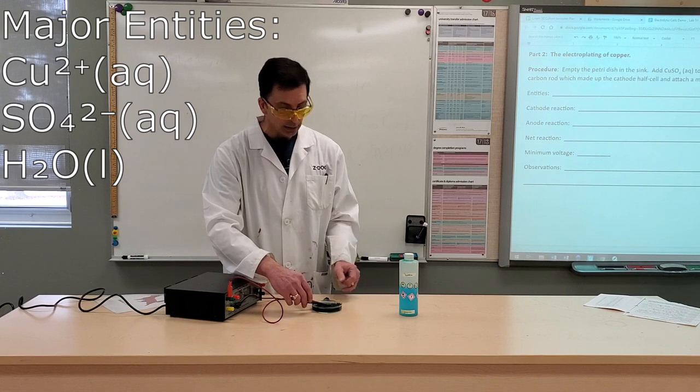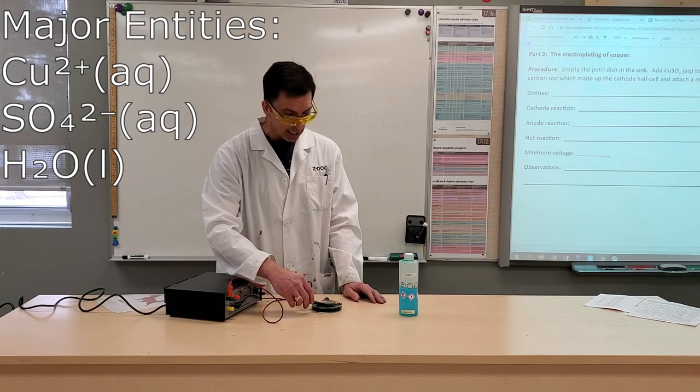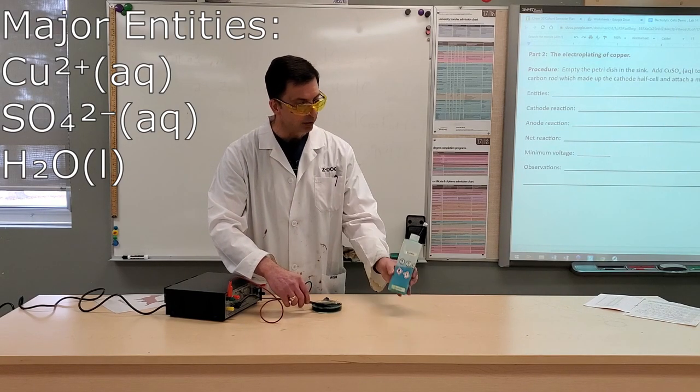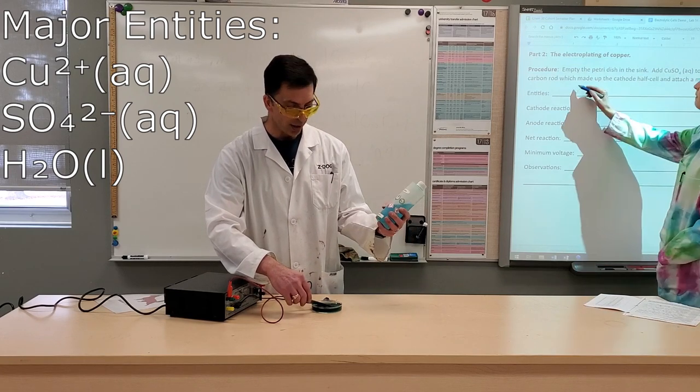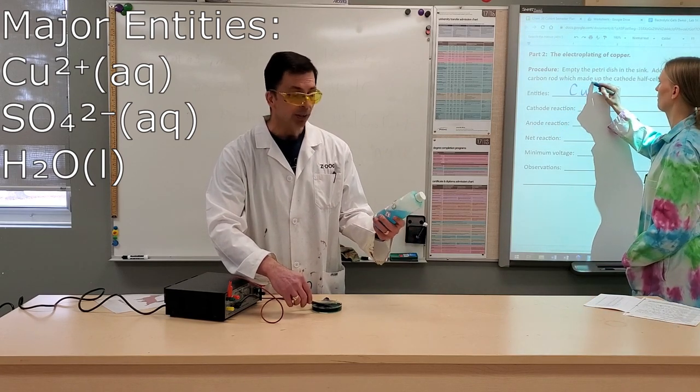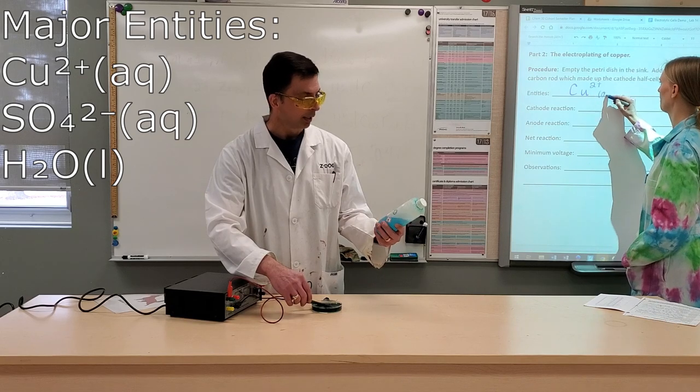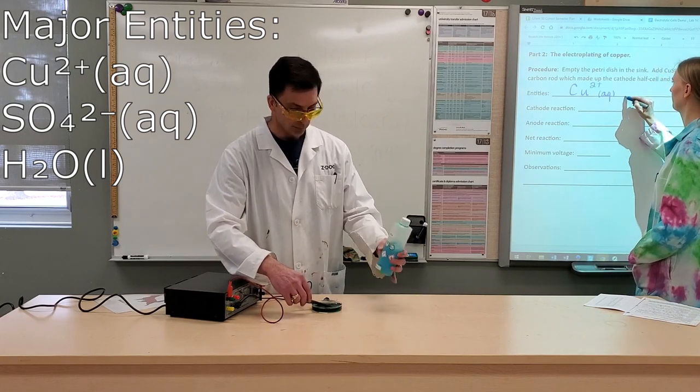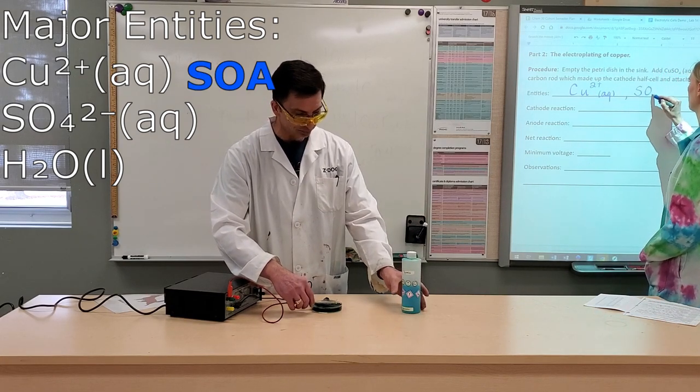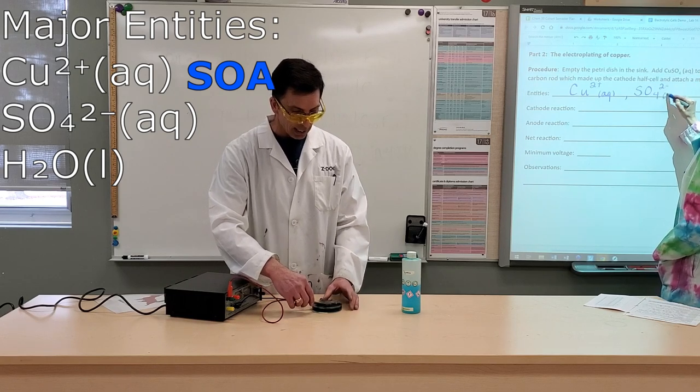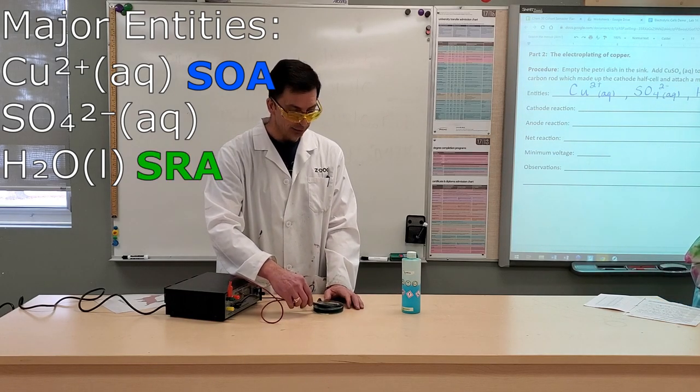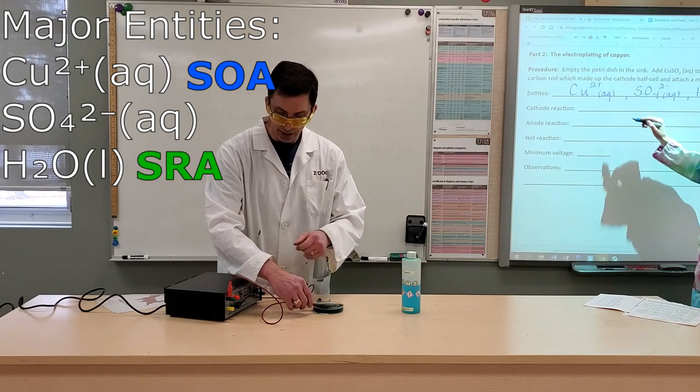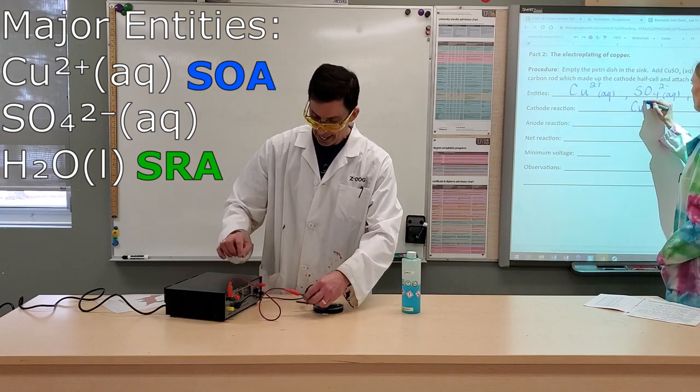So consulting your data book table, you would see that the copper ions Cu2+ is forming our cathode half reaction. Our strongest reducing agent is water and so that will be featured at our anode.